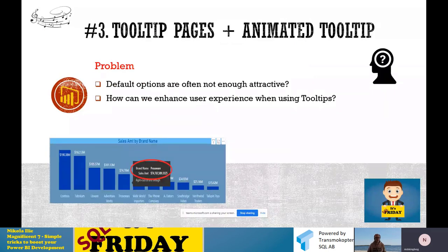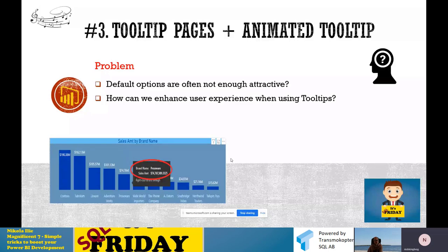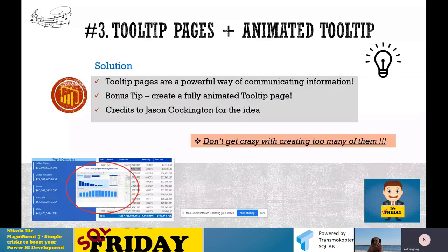We're at topic number three. I'd like to show you some neat techniques on how you can enhance your reports using tooltip pages. I really consider Power BI an awesome tool because it gives you flexibility to tell the data story in multiple different ways — it's about your creativity. Tooltips are a useful feature in Power BI reports. By default, when you hover over a visual element like a data bar, you see numbers for that specific portion of data. But what happens when default is not good enough, or when we want to give users better insights simply by hovering over data bars?